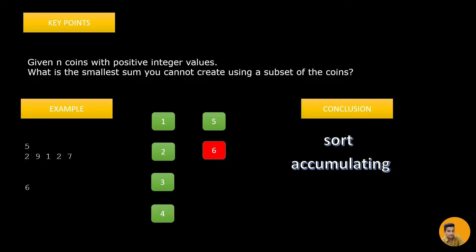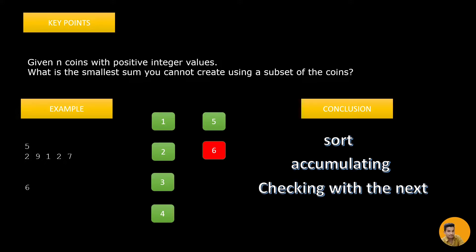Then we need an accumulating mechanism, because we saw that if we have 1 and we have 2 then we can create 3 - there's no point of even thinking about it. So we accumulate and then we need to do checking with the next element. When looking for 6, it was not present, the next number was 7, and the sum we had created was 5 - there is a gap that can't be filled.